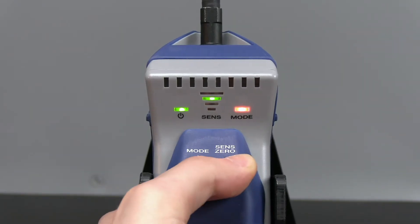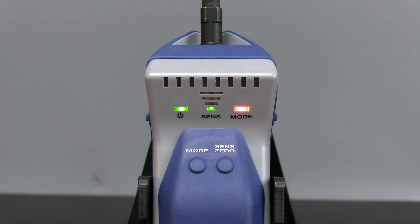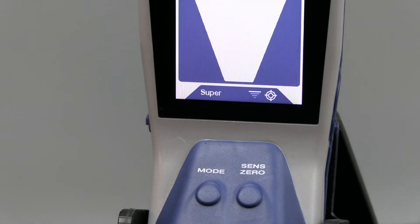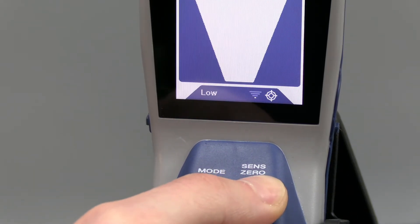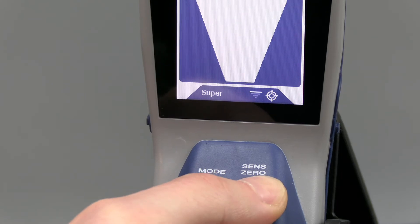Switching to a lower sensitivity setting can help you hone in on those larger leaks by ignoring the smaller ones. Generally speaking, start on the highest sensitivity and gradually reduce the sensitivity to only focus on larger leaks.